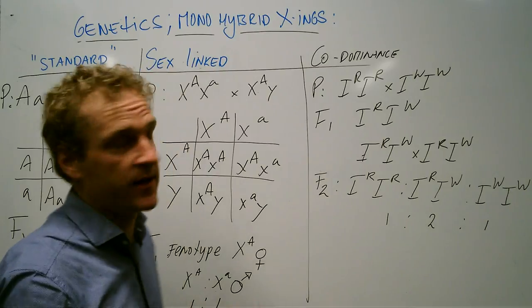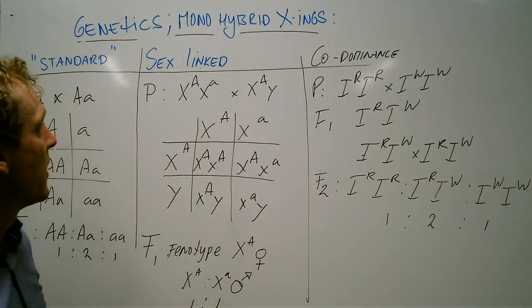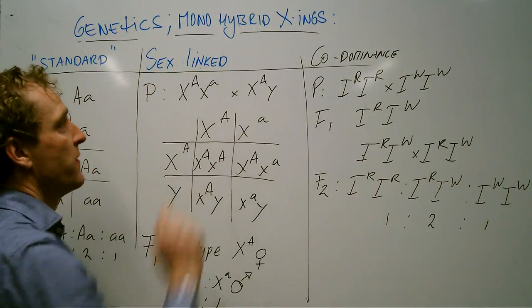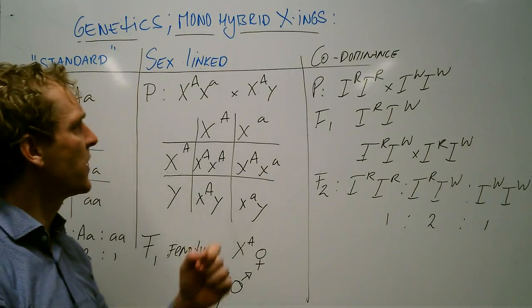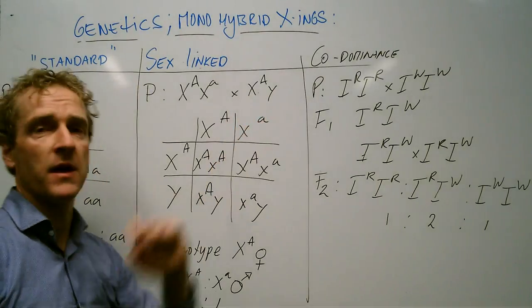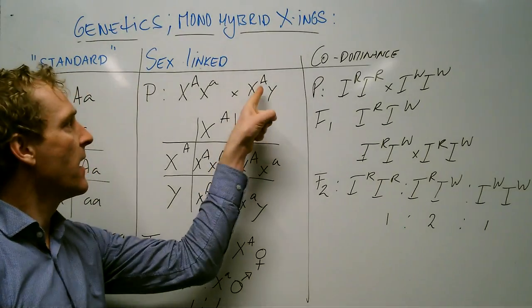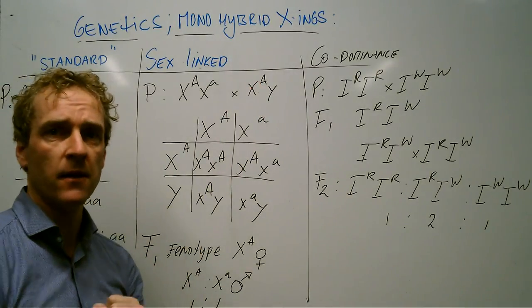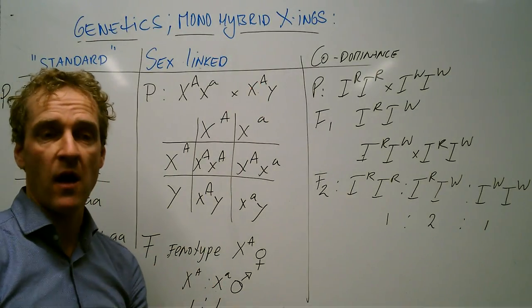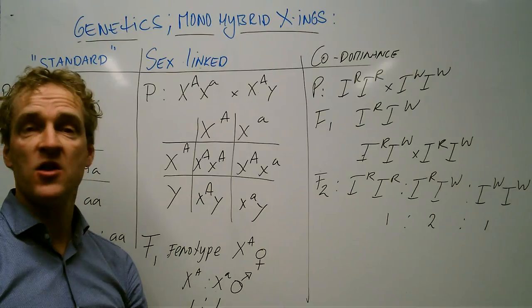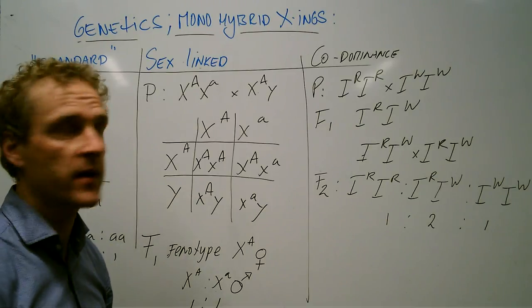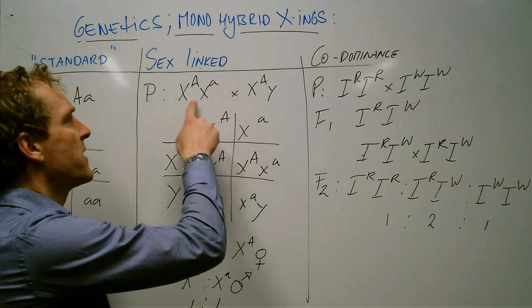Let's go over to our sex-linked monohybrid crossing. What we see here is two individuals and as you can see there's a man because he has a Y chromosome and he has the dominant allele for a trait and we could call that seeing color for example. Seeing color is a dominant trait and we can see your lady here.